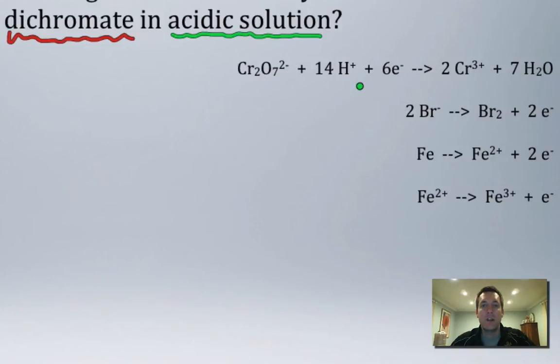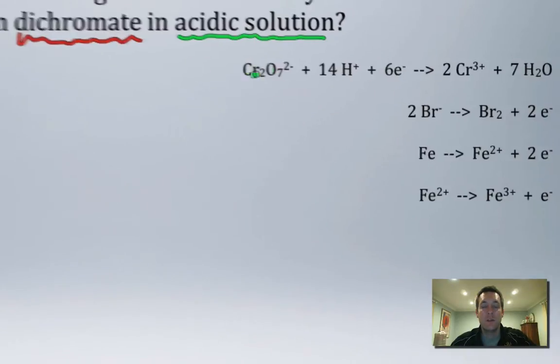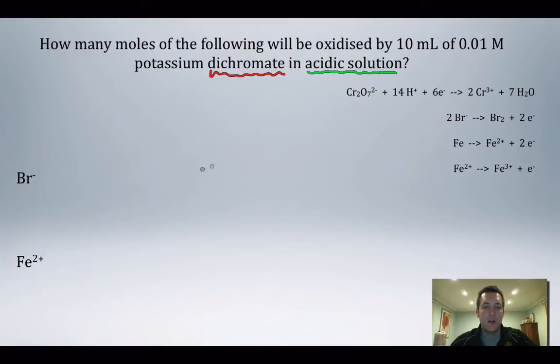Dichromate always gains electrons like any good oxidizing agent. So we're going to be looking for things that are losing electrons when they react with it.